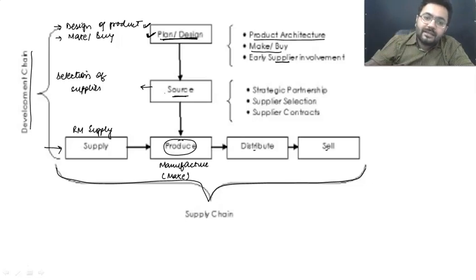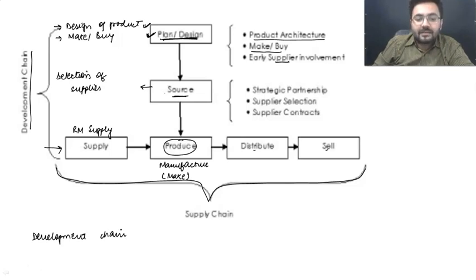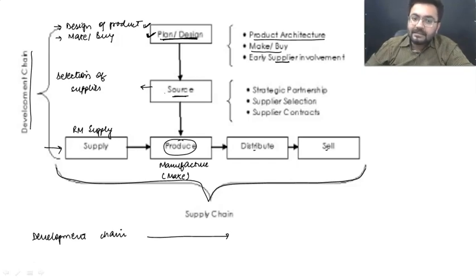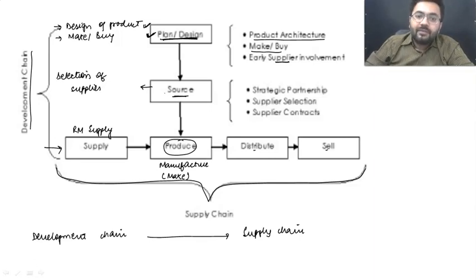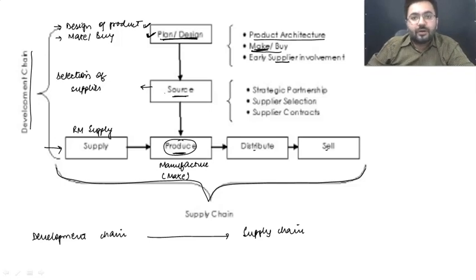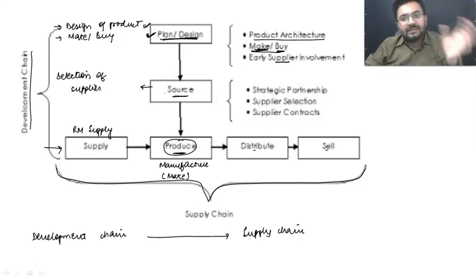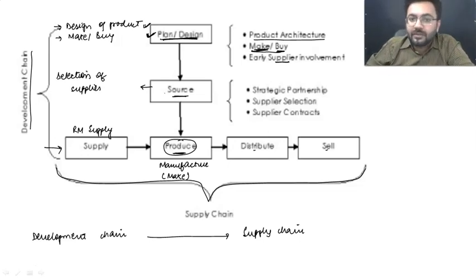Whatever decision is being taken in the development chain is going to impact my supply chain. Because if we have decided to make our own product, then we select the produce part in the supply chain. If we have decided to buy, then only the supply and distribution part is going to be there — there will be no stage named as production.